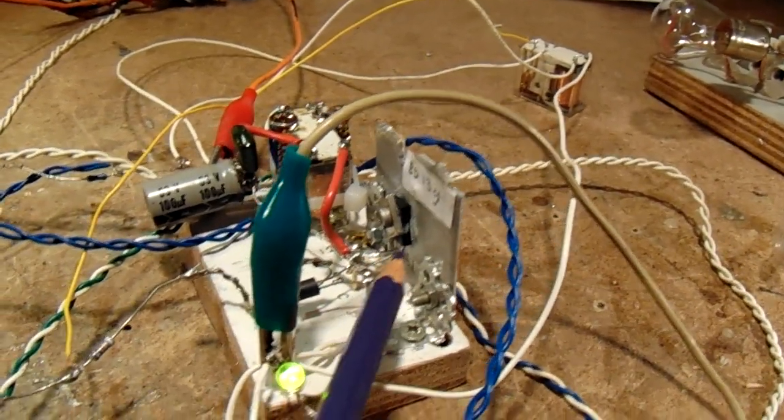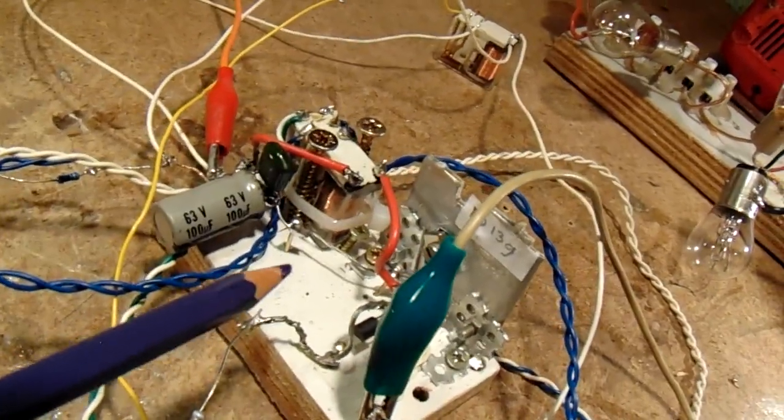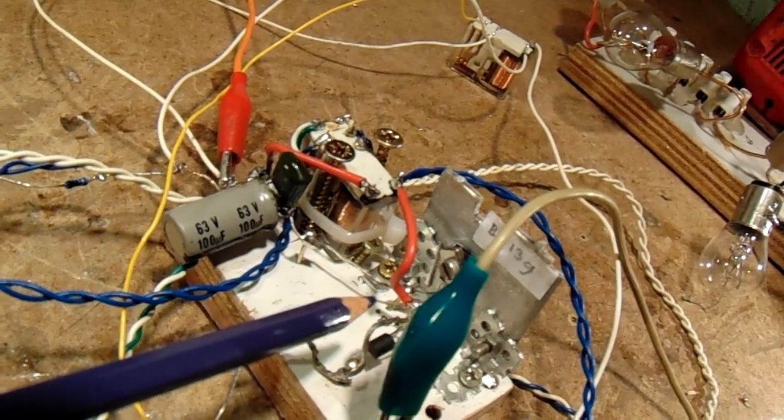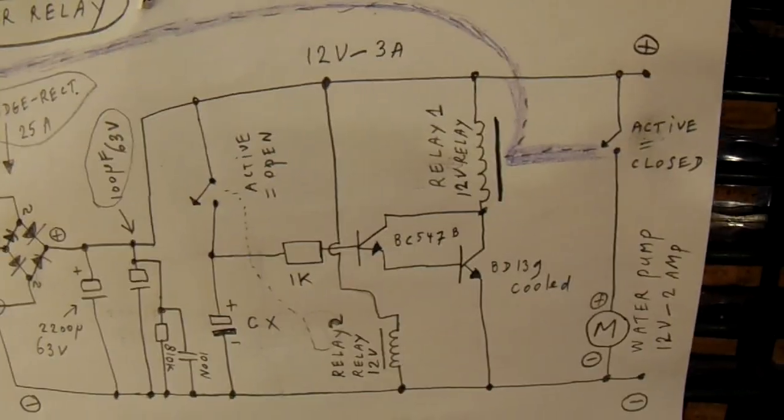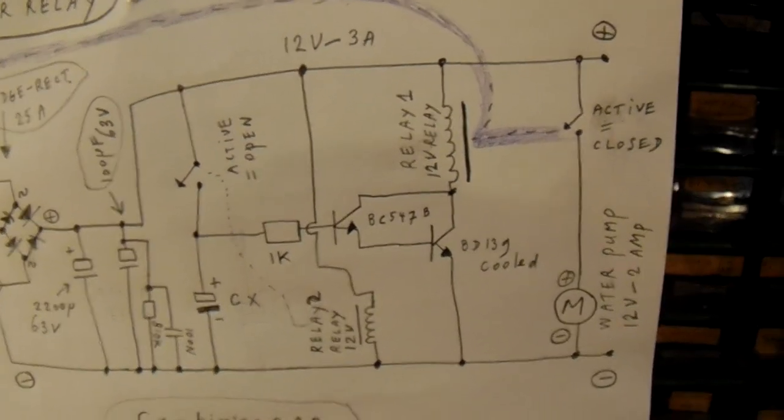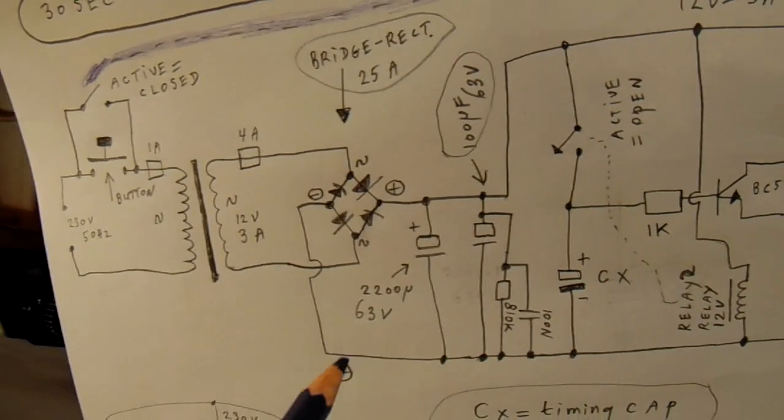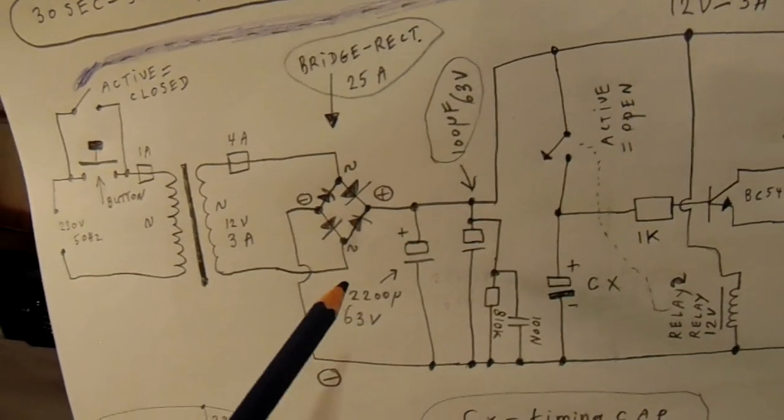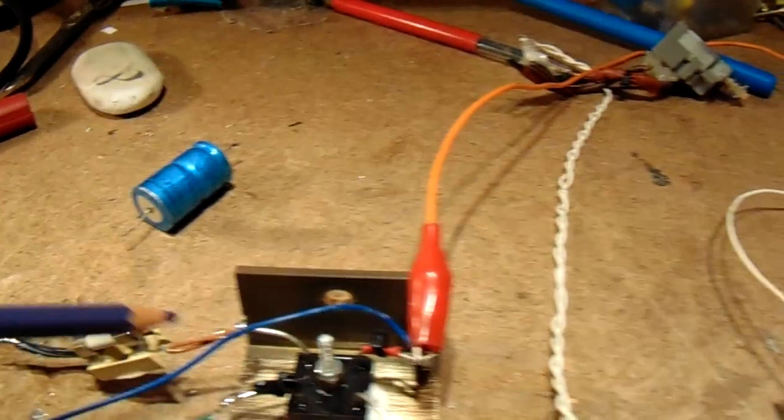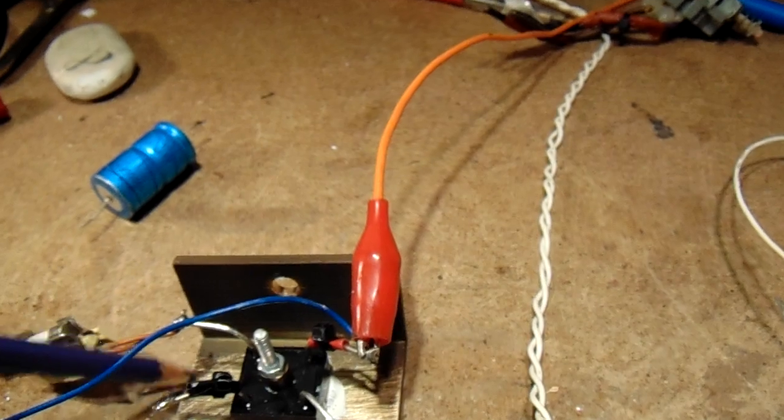This is the Darlington, the BD-139 with the small BC-547B here. And that's in fact all what it is. Very simple circuit. You need a good bridge rectifier. It has to handle approximately 3A. I've cooled it here. It's a piece of copper, copper plate.